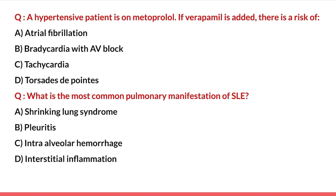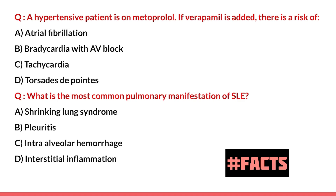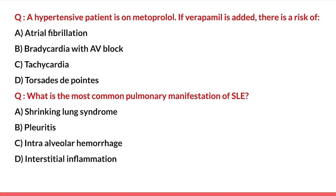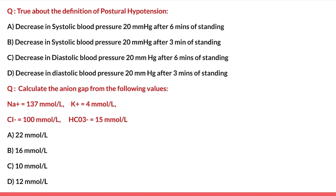What is the most common pulmonary manifestation of SLE? Options are shrinking lung syndrome, pleuritis, intra-alveolar hemorrhage, and interstitial inflammation. This is a direct question and the answer is pleuritis, which is the most common pulmonary manifestation of SLE.